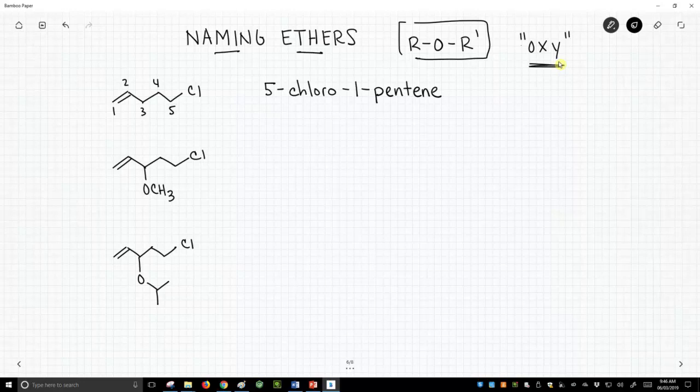a five-carbon alkene pentene. When we number this chain, we number it starting on the left so that the alkene gets as low a number as possible, and that means the chlorine gets a high number of five, but that's okay. It's all about the high priority functional group. So we have 5-chloro-1-pentene.